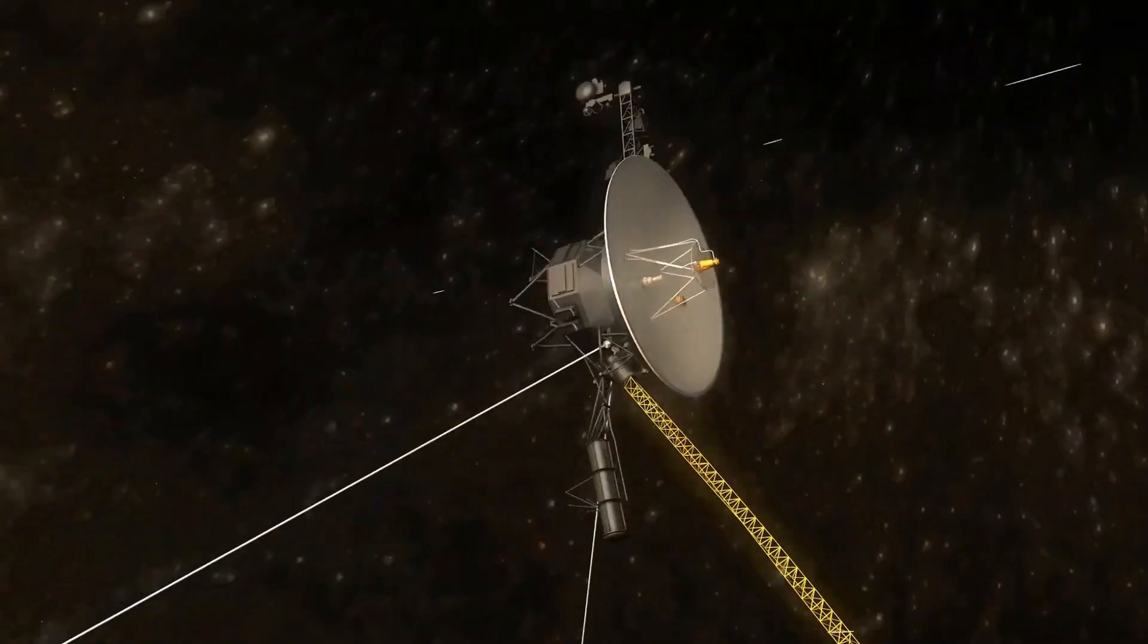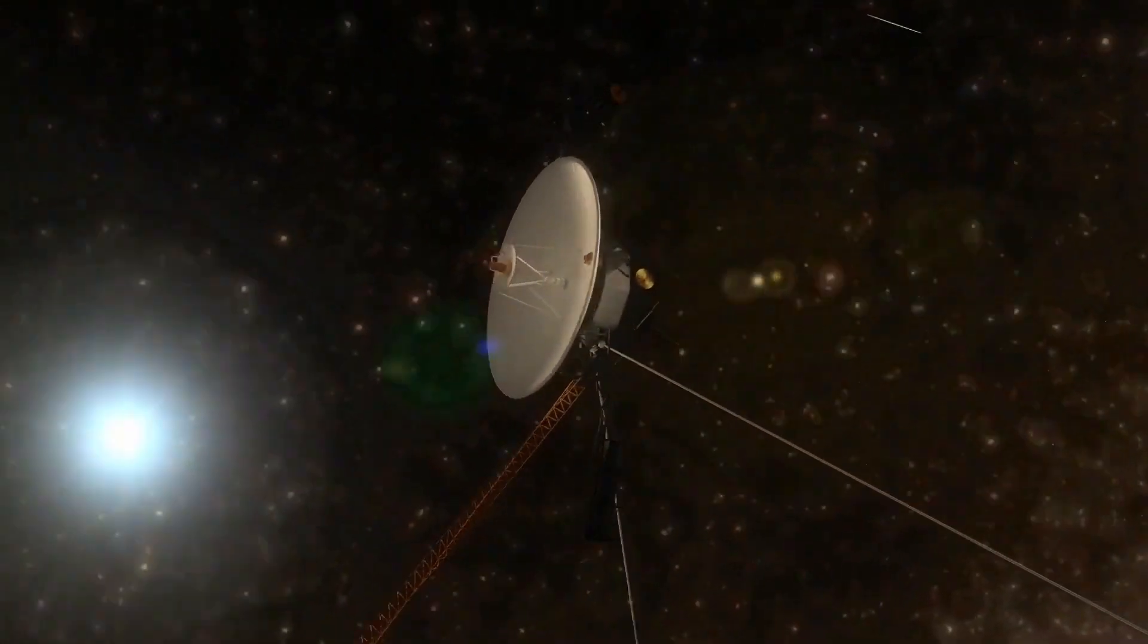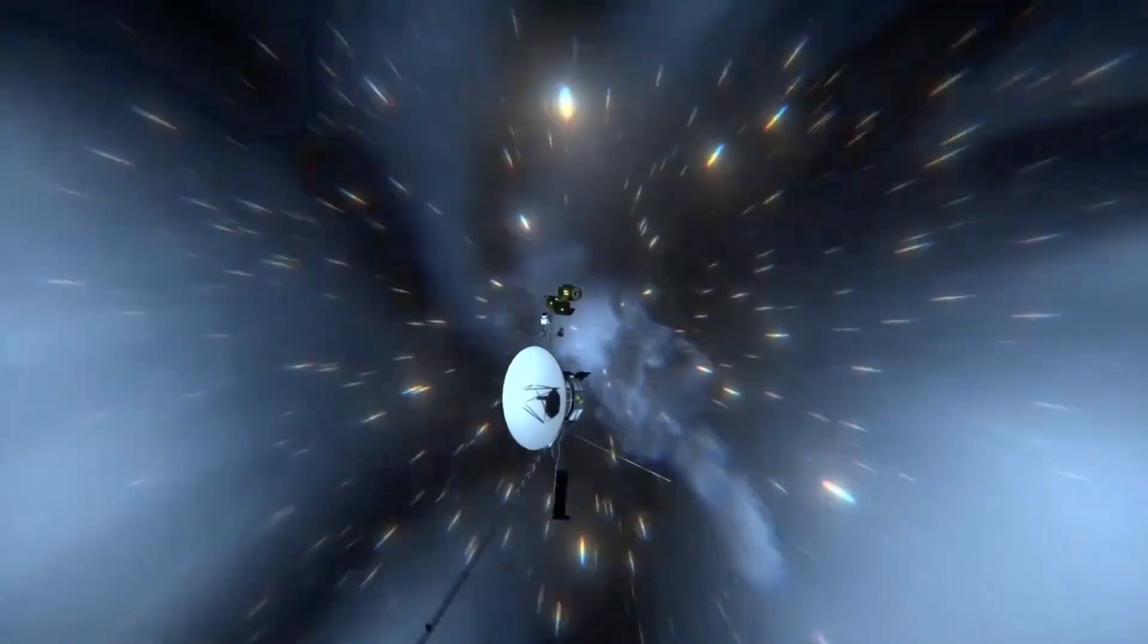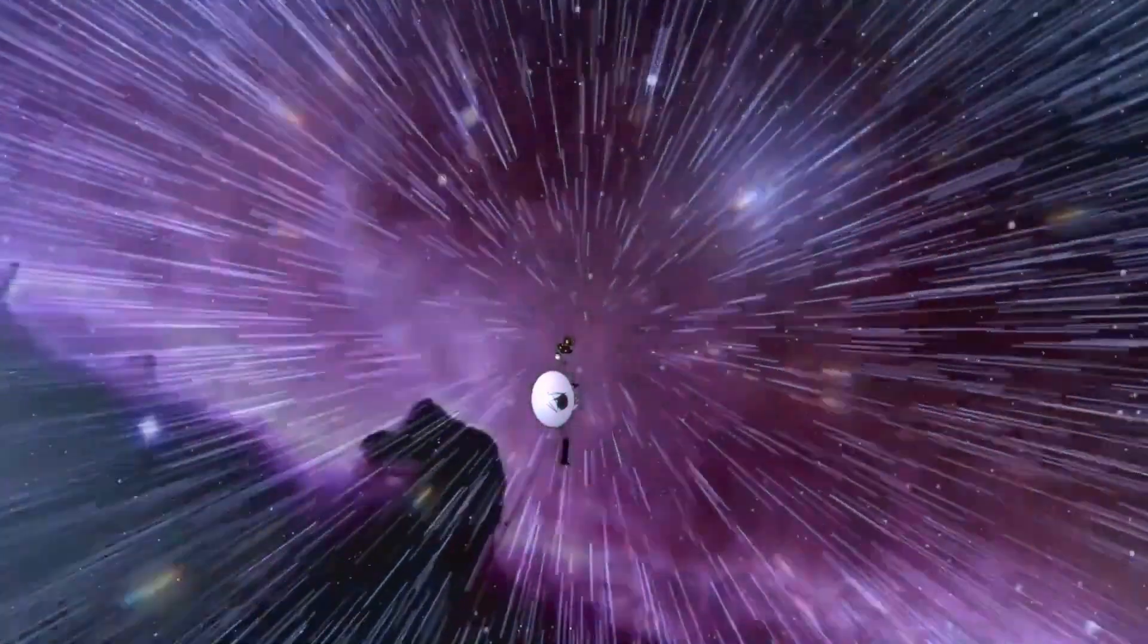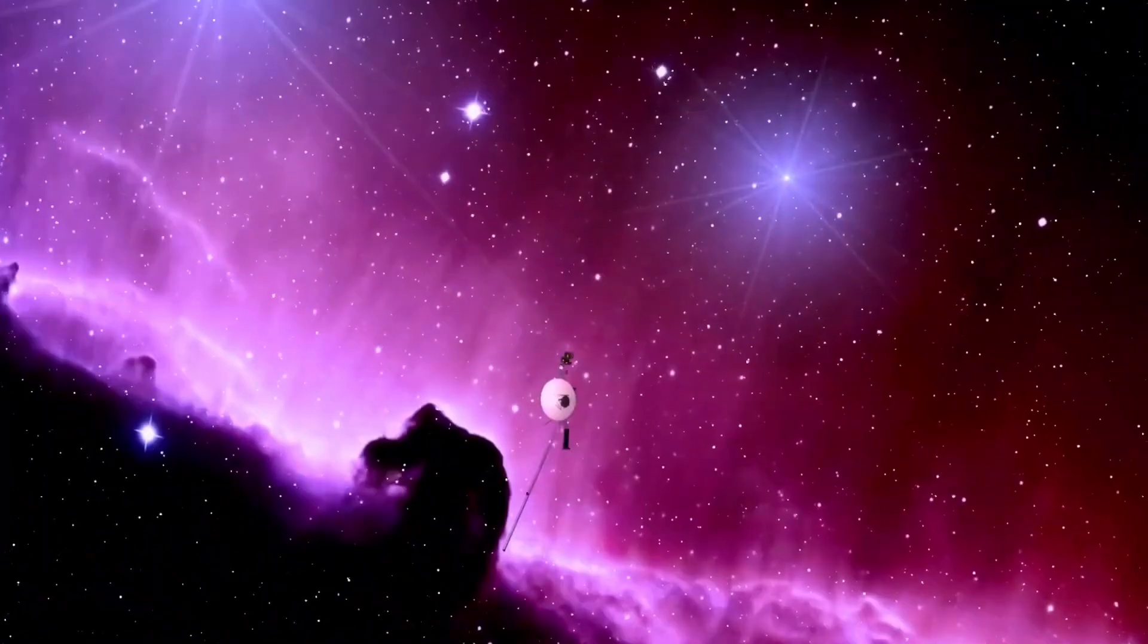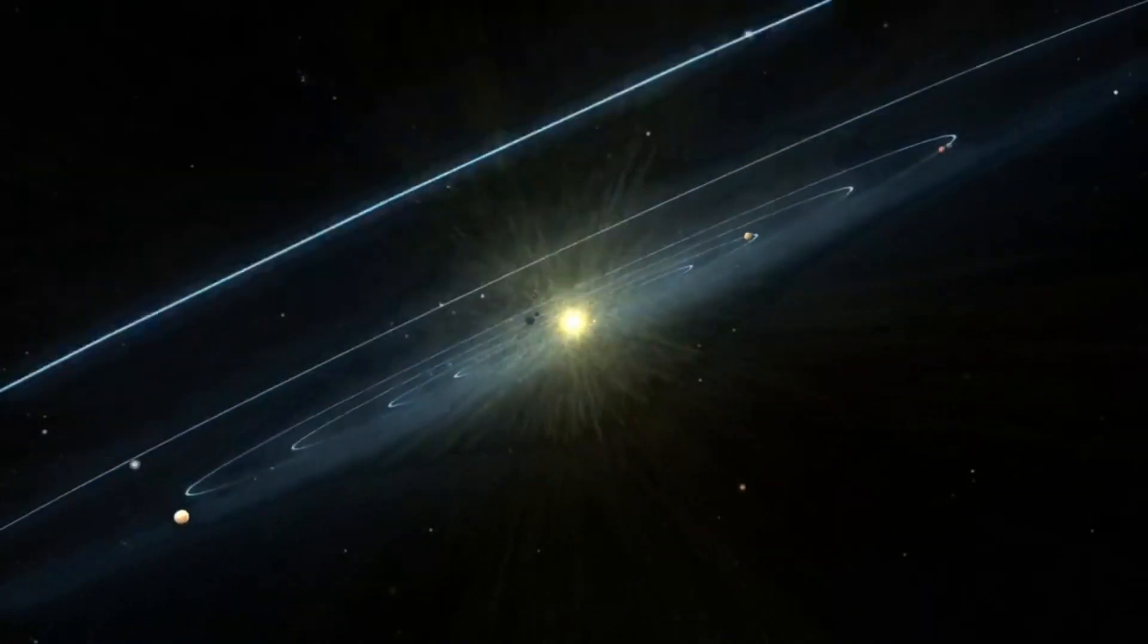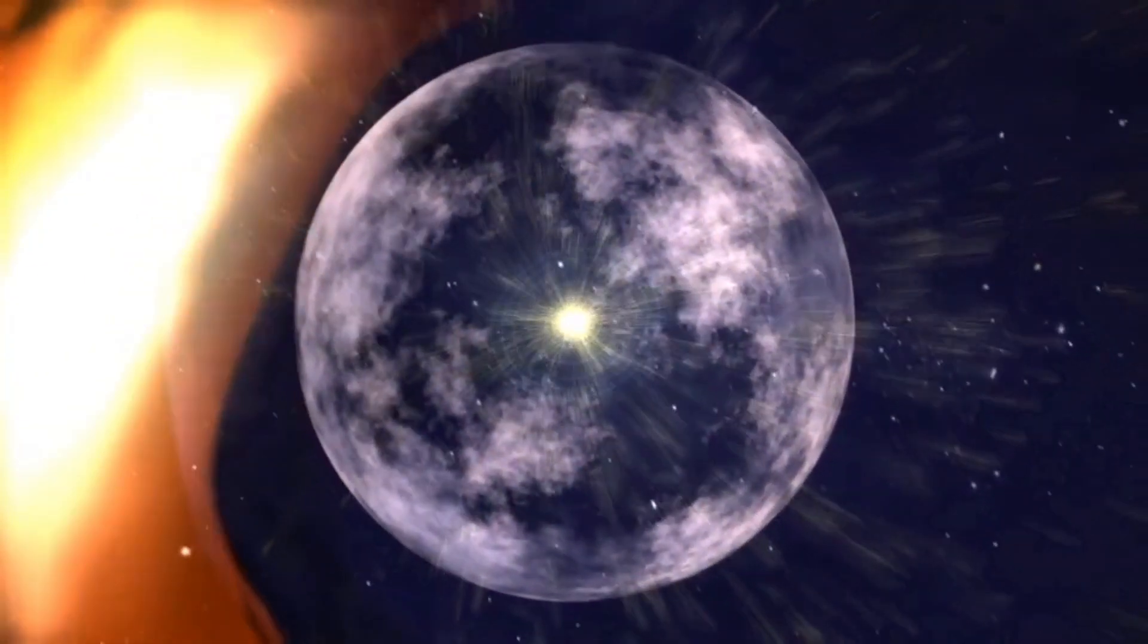Four years ago, the Voyager 2 probe became just the second human-made object in history to exit the solar system and officially enter interstellar space. On November 5, 2018, the craft officially left the solar system as it crossed the heliopause, the boundary that marks the end of the heliosphere and the beginning of interstellar space. This area is the outermost region of the solar system, sometimes referred to as the bubble, and is located around 119 astronomical units from the sun.